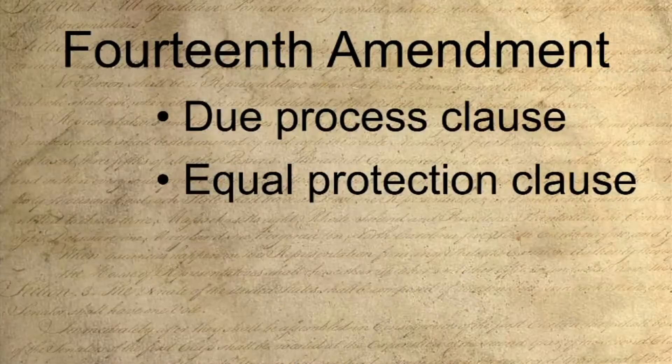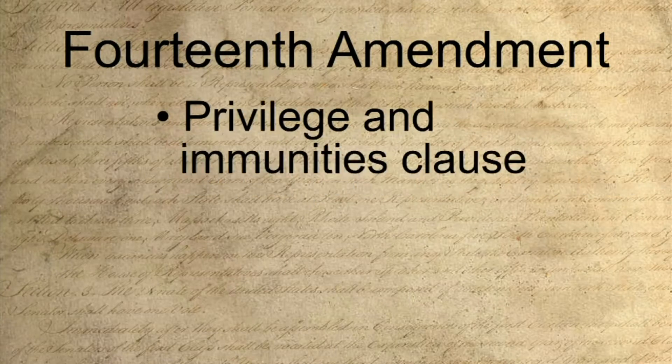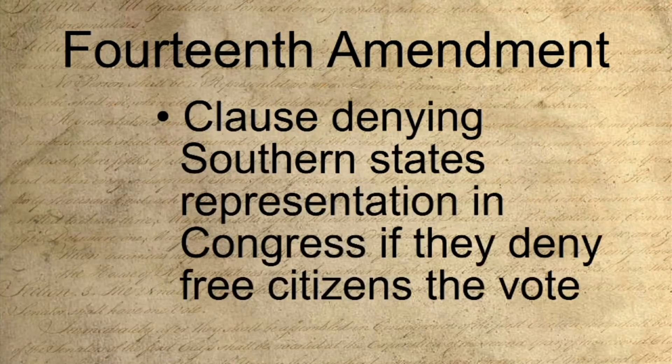The 14th is more complicated because it has a lot of provisions. It has a due process clause, an equal protection clause, a privileges and immunities clause, and a clause that tries to deprive Southern states of representation in Congress if they don't allow all free citizens and men to vote. So aspirationally, they really do commit to a world in which newly freed slaves shall be equal citizens with equal voting rights.